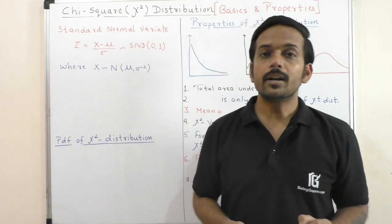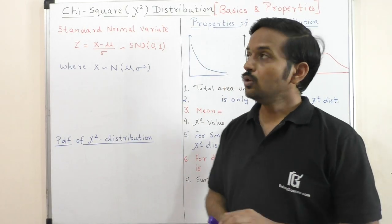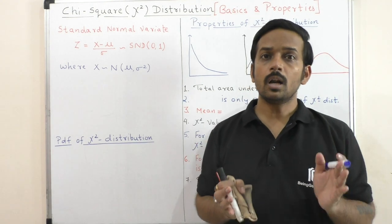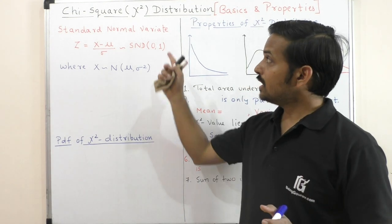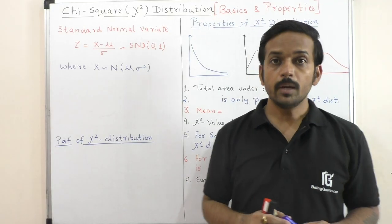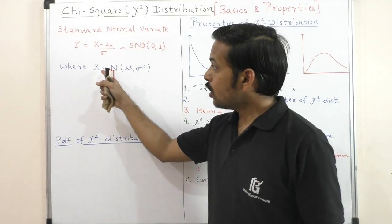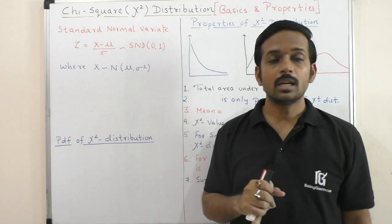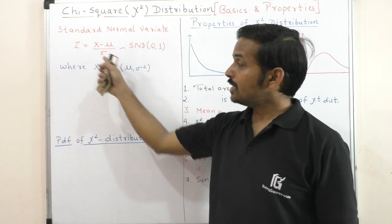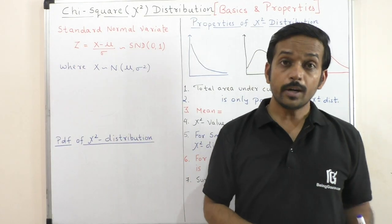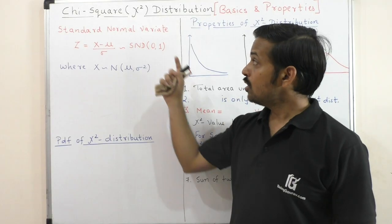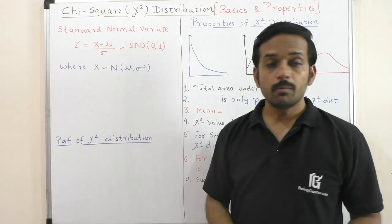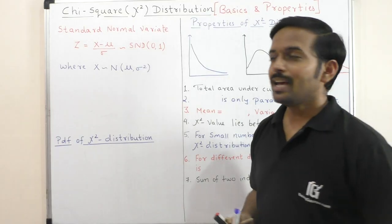So, what is chi-square distribution? We have already discussed what is standard normal variate. What is X — a normal variate with mean mu and variance sigma square. So what is Z — the standard normal variate — with mean 0 and variance 1. Z equals X minus mu upon sigma.